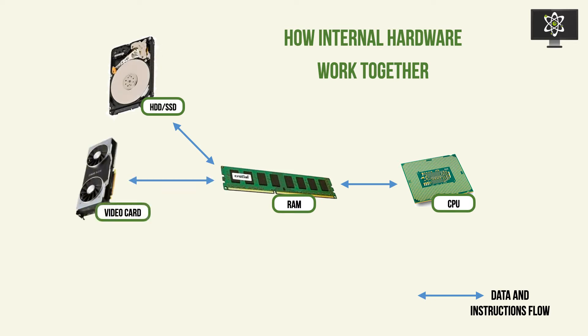Likewise, any graphics information to be processed and transmitted to your external devices will be done on the video card through the RAM to be processed on the CPU. Likewise, audio data from your sound card is received at the sound card, transmitted through the RAM, and is processed by the CPU. So you essentially need a platform for this sort of interaction between the components to happen. And this is where the motherboard comes in.